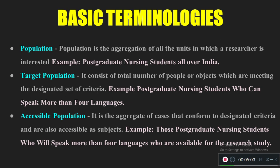Population can be divided into two types: target population and accessible population. Target population is one which meets all the designated criteria. For example, my criteria could be postgraduate nursing students who know multiple languages — those who can speak more than four languages. So anyone with a postgraduate nursing degree who knows more than four languages would be my target population.